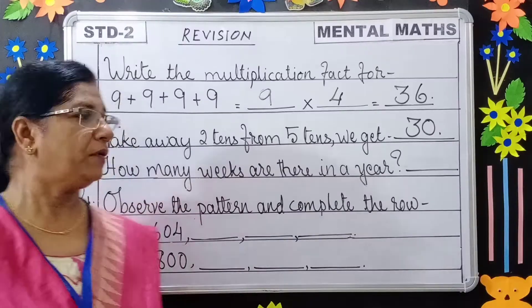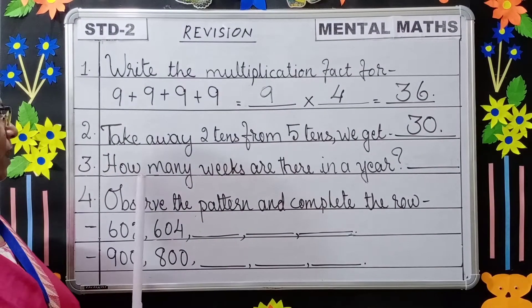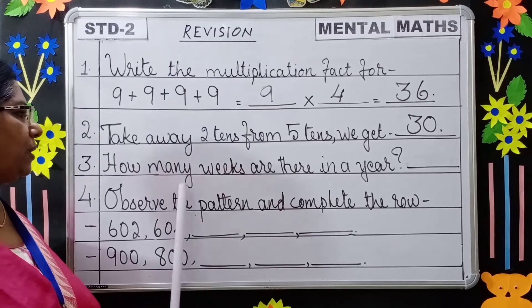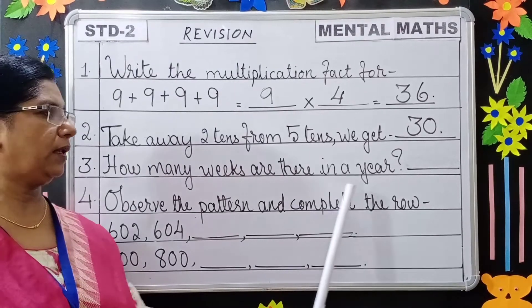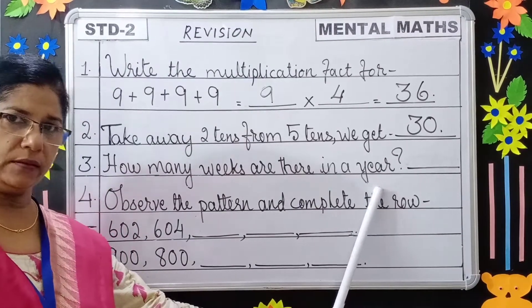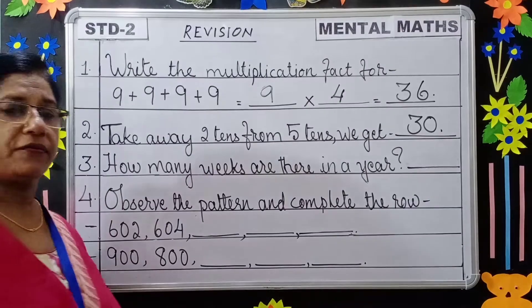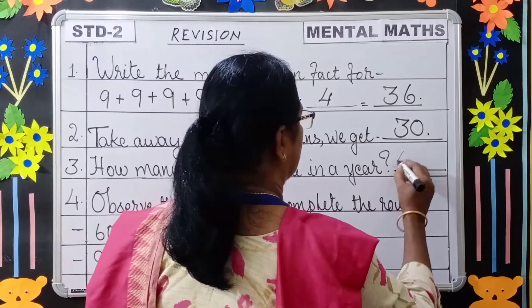Moving to the third question: How many weeks are there in a year? Do you know children? There are 52 weeks in a year.